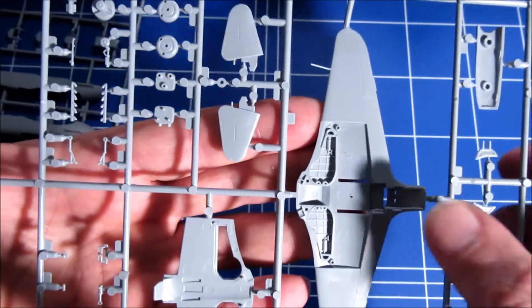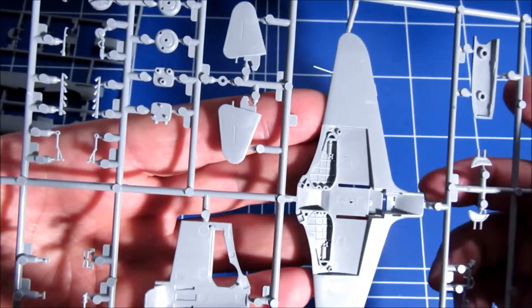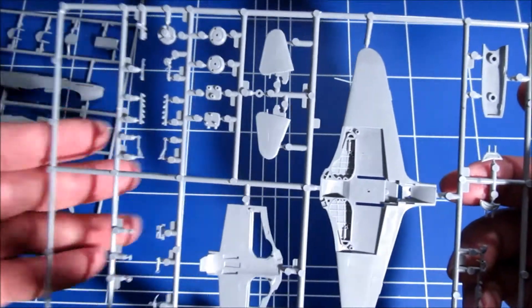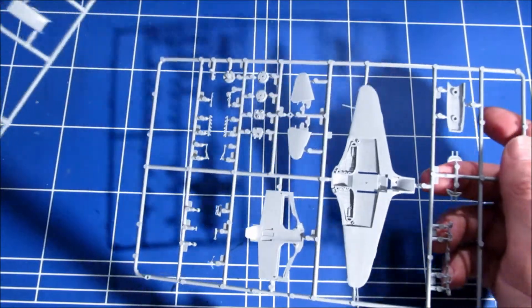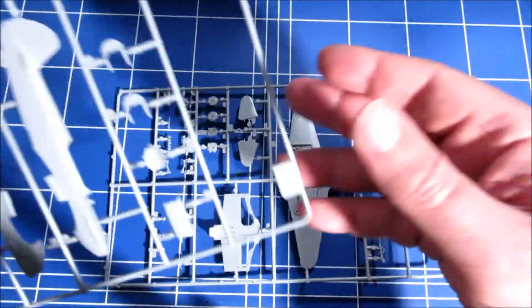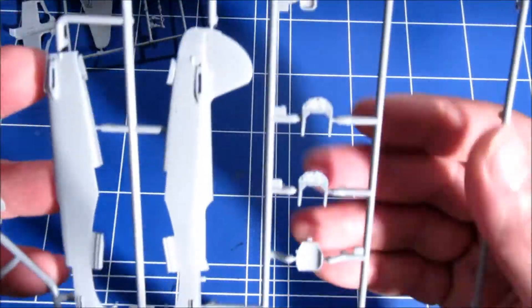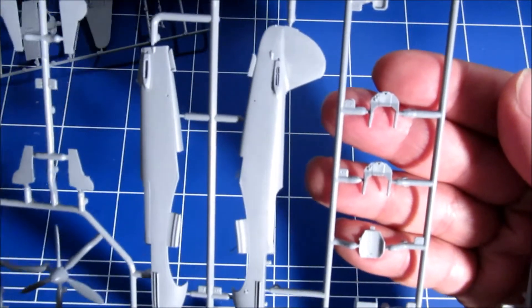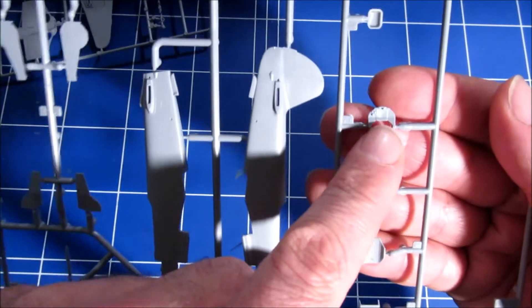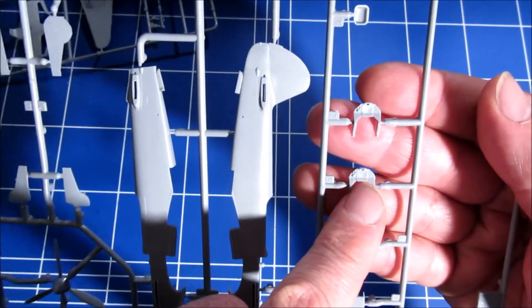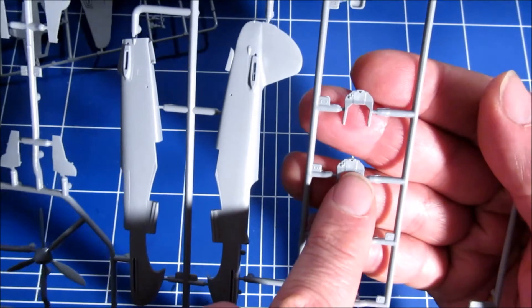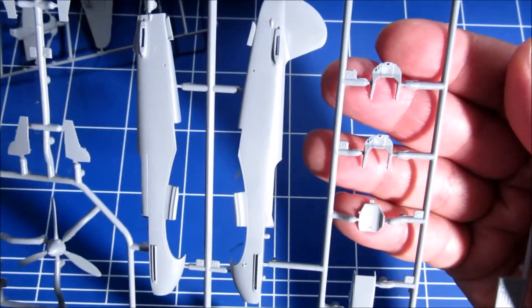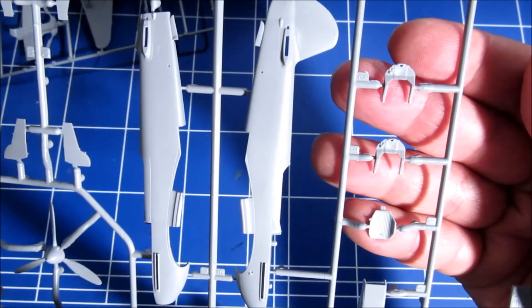The interior wheel well detail. Yes, this looks very good. You also have a choice in instrument panels. One with the dials in raised detail and one without, like a clean one if you want to put a decal on there.